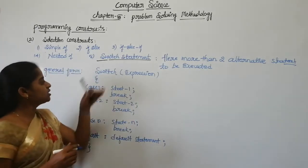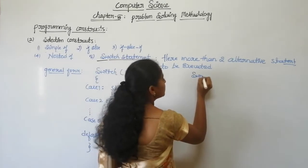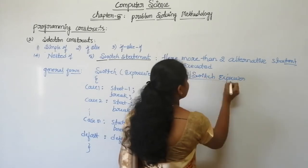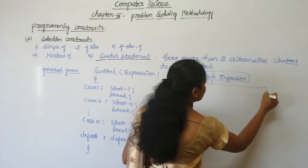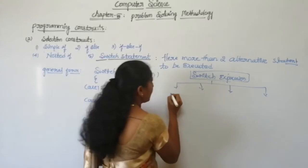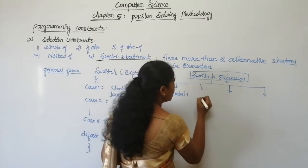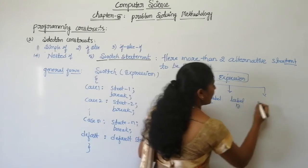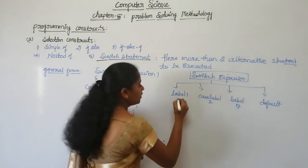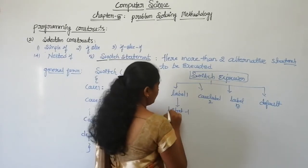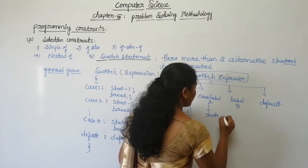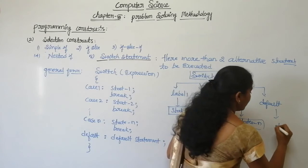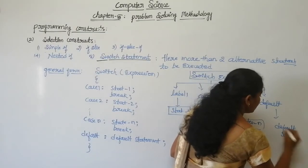This is the flowchart for the switch statement. The switch expression is evaluated, then compared against case label 1, case label 2, through case label n, and finally default. Statement one, statement two, and statement n are executed for their respective matching cases, and the default statement executes if no case matches.